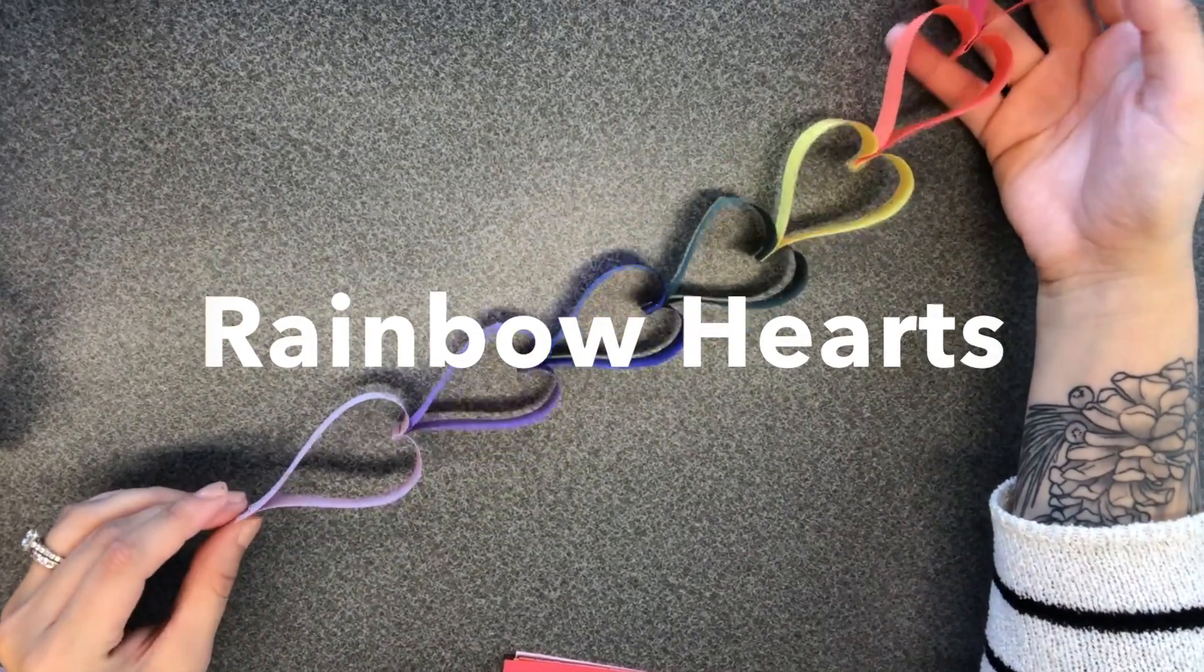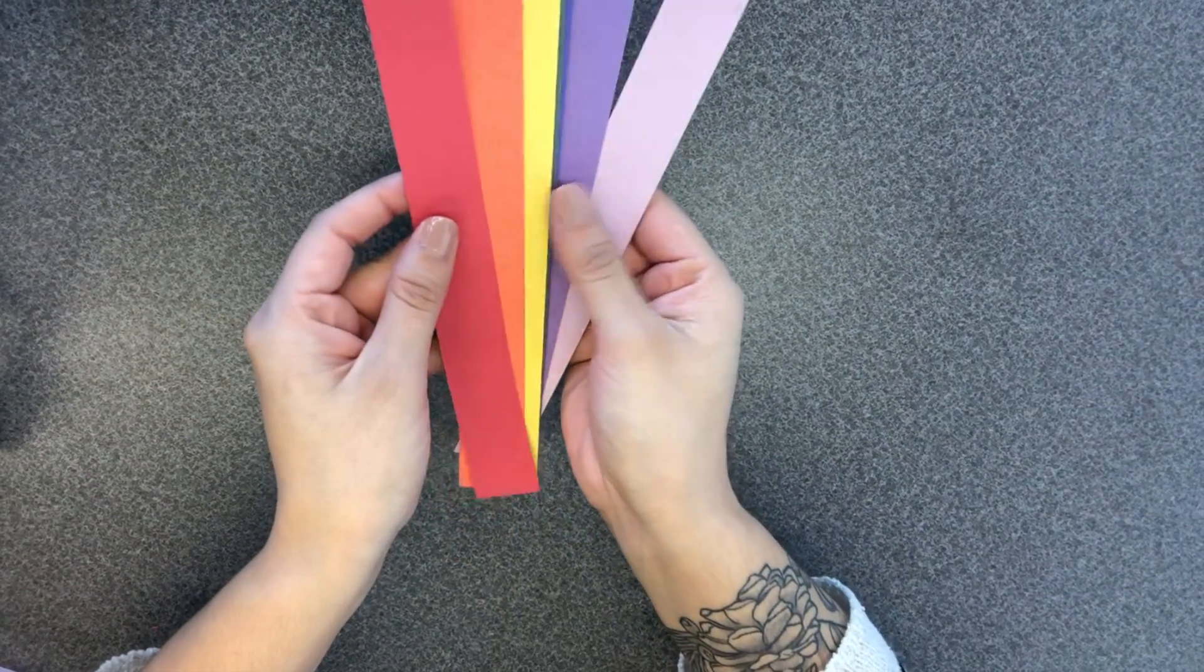Hey everybody! So this pride project is a rainbow hearts chain. And what you're going to need are these strips of rainbow construction paper and a stapler.